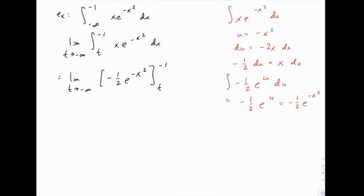We've already done the next step, which is to take the antiderivative. So this equals the limit as t approaches negative infinity of negative one-half e to the negative x squared, evaluated from t to negative 1. Now we simply plug in the limits of integration. When we plug in negative 1, we get negative one-half e to the negative (−1)² , then minus negative one-half, so plus one-half e to the negative t squared.